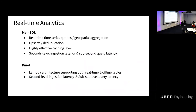Next, I want to talk about real-time analytics. At Uber, real-time analytics is mainly composed of two parts: MemSQL and PNOT. MemSQL is an analytic engine that supports real-time time series queries and geo queries, upserts, and data deduplication. It has a very effective caching layer, with seconds-level ingestion latency and sub-second query latency. PNOT originated from LinkedIn and has a lambda architecture to support both real-time and offline data, also with seconds-level ingestion latency and sub-second query latency.